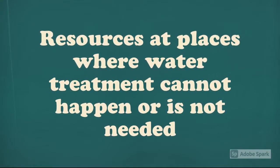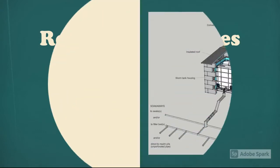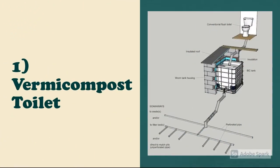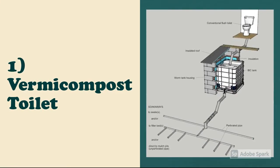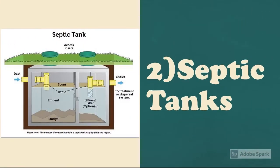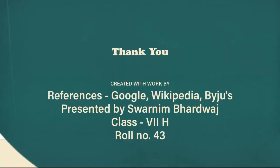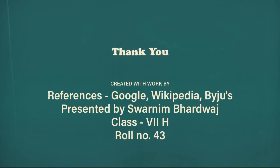Now let's talk about resources at places where water treatment cannot happen or is not needed. First: vermicompost toilet. Second: septic tanks. References: Google, Wikipedia.